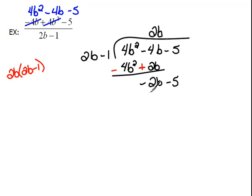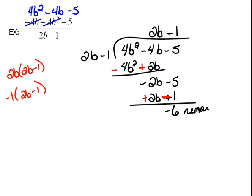2b times what gives you negative 2b? That would have to be a negative 1. Negative 1 times 2b minus 1 is negative 2b plus 1. And then we change our signs and combine. So now we have a remainder of negative 6. So when we write our answer, it is 2b minus 1 and a negative 6 over 2b minus 1.